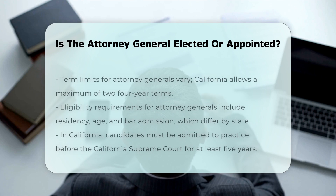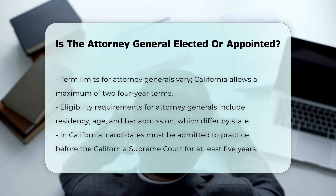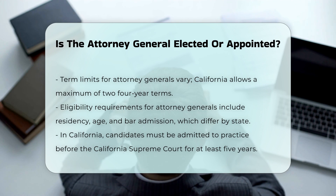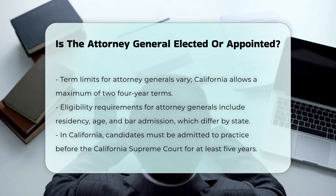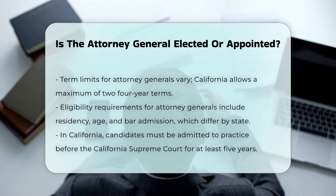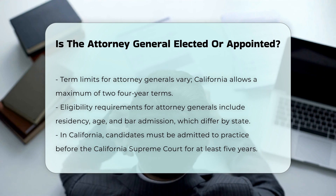Term limits and eligibility. The terms and eligibility requirements also vary. Many states have term limits, such as California, where the Attorney General can serve a maximum of two four-year terms. Eligibility requirements, including residency, age, and bar admission, are specified by each state. For example, in California, a candidate must be admitted to practice before the California Supreme Court for five years before being eligible for the position.